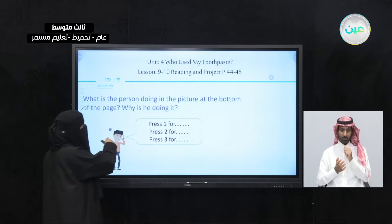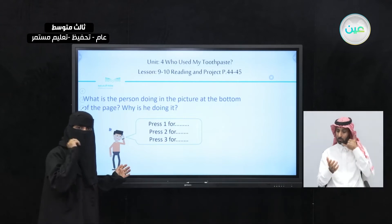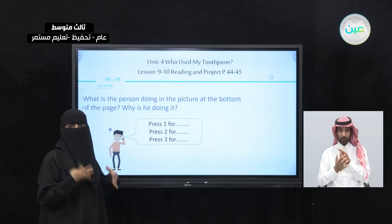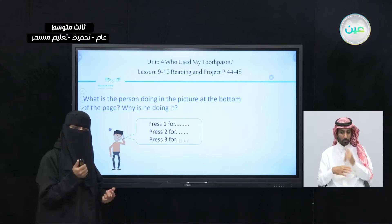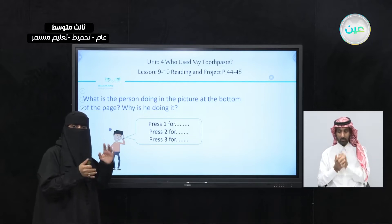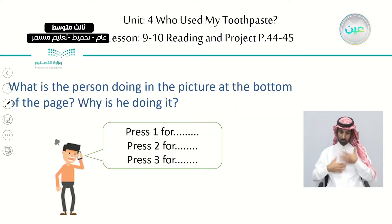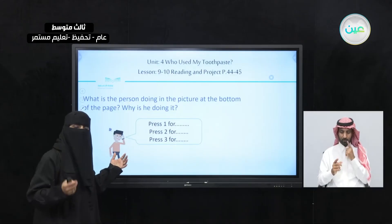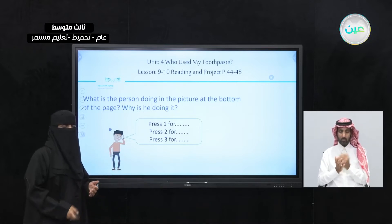He is very angry. So what is the person doing in the picture? We can hear 'press 1, press 2, press 3.' Where do we hear this? When you are calling companies — for example, if you want to complain about your phone or your internet, you call the company that provides the service and they say 'press 1 for Arabic' or 'press 2 for complaints.' So he is not happy with the service. He has a problem, an issue, and he wants to report the problem and complain to the company.